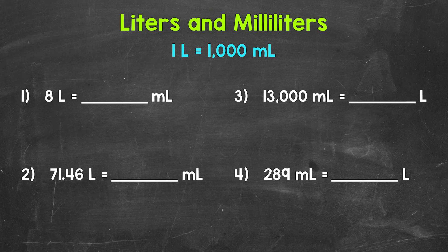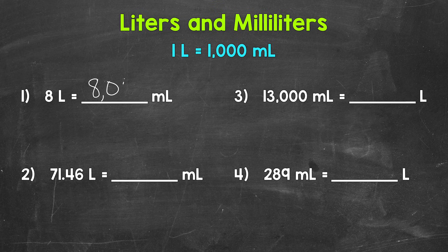Let's jump into number one, where we have 8 liters equals how many milliliters. One liter equals 1,000 milliliters, so we have 1,000 milliliters 8 times — in other words, 8 times 1,000. So we have 8,000 milliliters. 8 liters equals 8,000 milliliters. When we go from liters to milliliters, we multiply by 1,000.